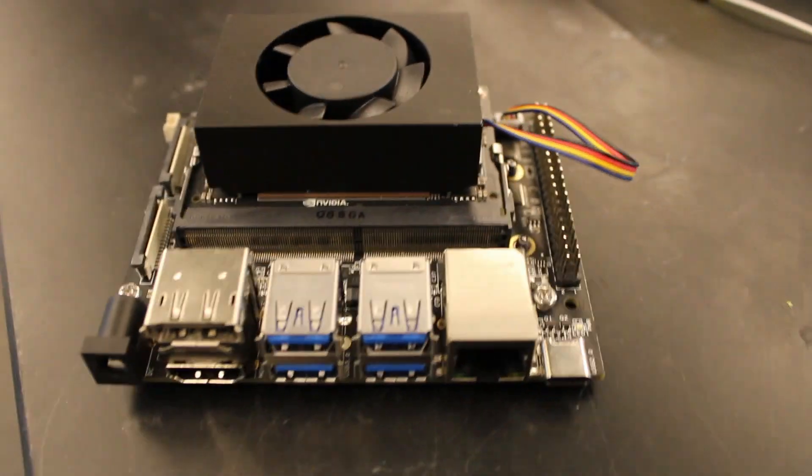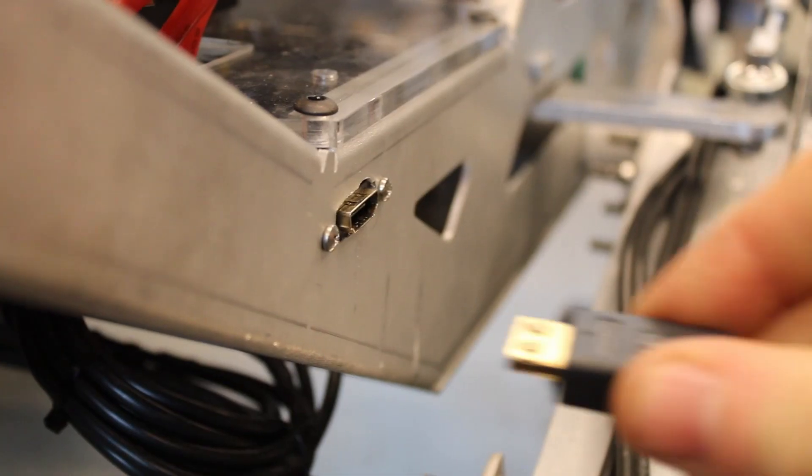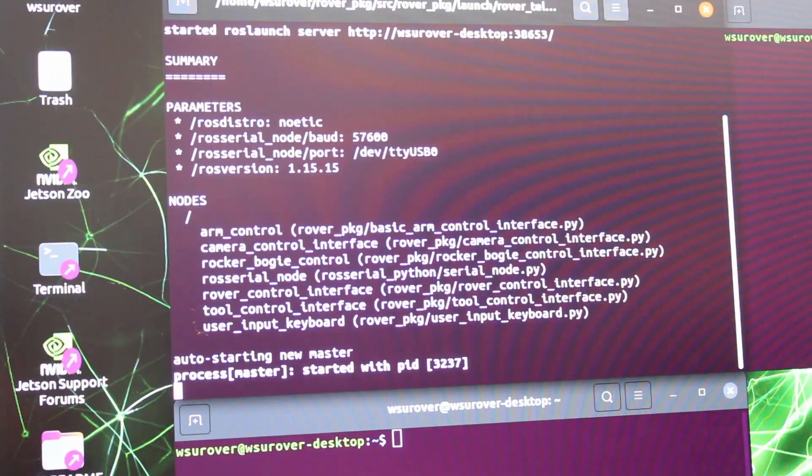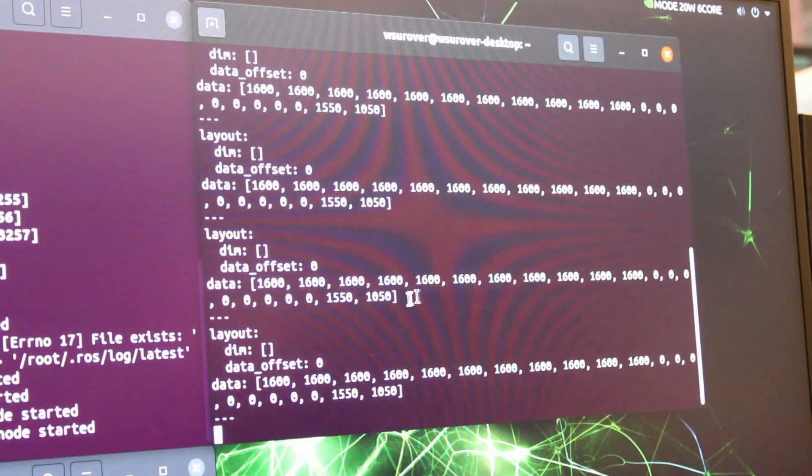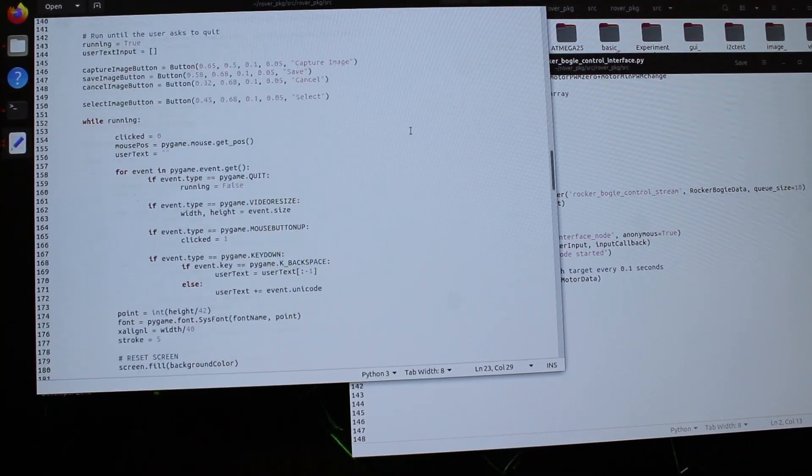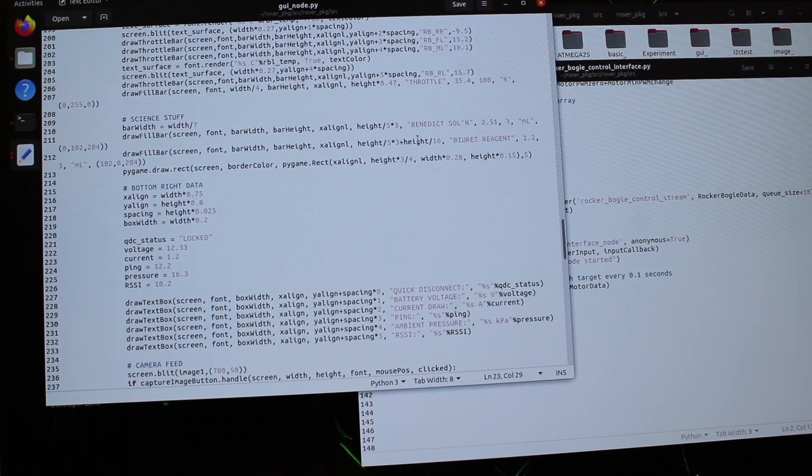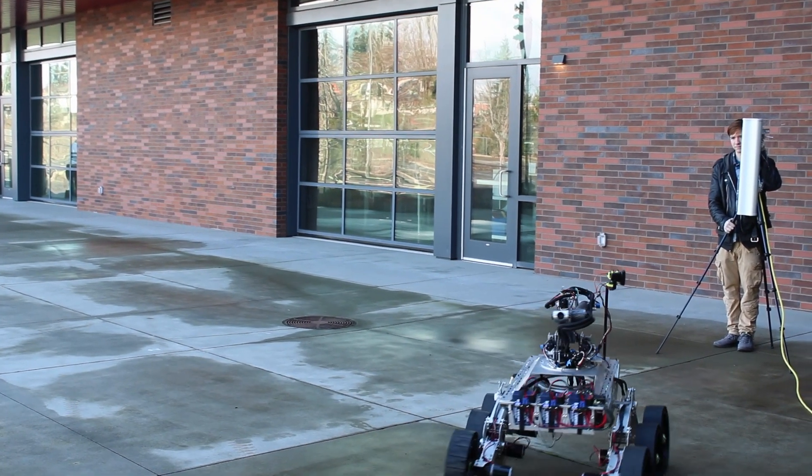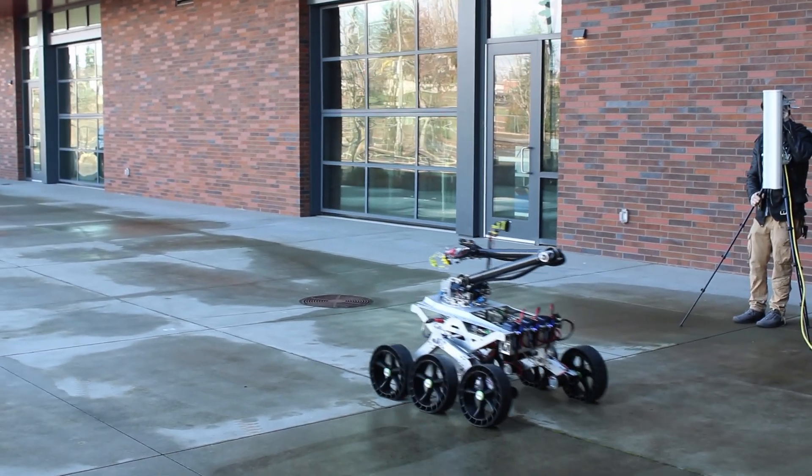The Jetson handles the bulk of the processing of the rover. We have chosen to implement the Robot Operating System, also called ROS. We have chosen to write most of our software in Python, and ROS allows for the convenient implementation of multiple different scripts. ROS also has built-in communication allowing for communication between ROS devices. Our rover contains a ROS device, and our base station also contains a ROS device.